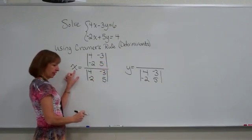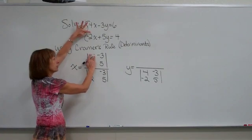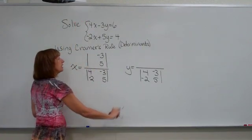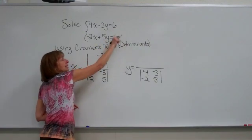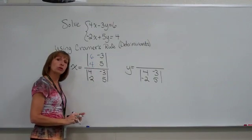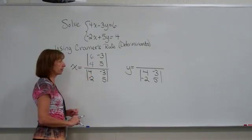But for the x letter, you erase out x's coefficients and replace those numbers with the constants from the other side of the equal sign. And that will form the correct determinant that will give you the numerator of the value for x that solves it.